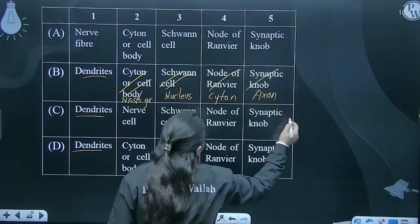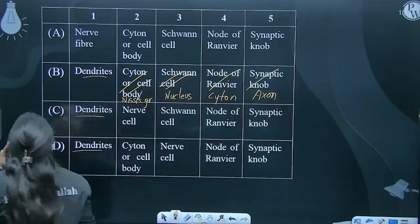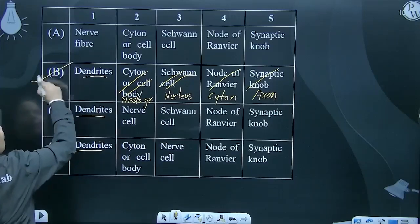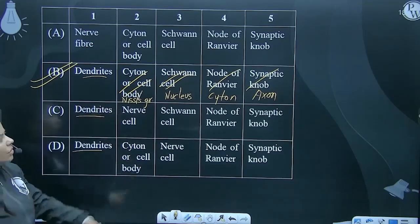I think the diagram and the table are from two different perspectives. Basically there's something mixed up here. So you should mark B as the answer because dendrite comes first in B. I have just corrected it.